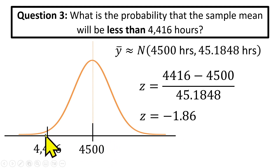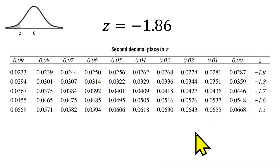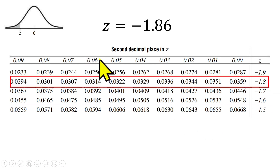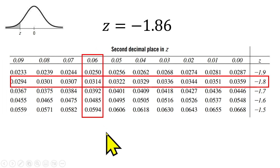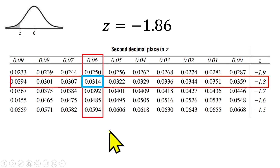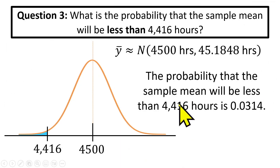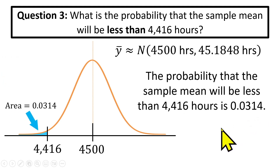To get the area in the tail, we look up this value on the z-table. Here's the z-table: minus 1.86. We start by looking at minus 1.8, then go to the top for the second decimal place at 0.06. Where those intersect, we get the area to the left of the z-value — the area in the lower tail. In this case that area is 0.0314, about 3%. So the probability that the sample mean will be less than 4,416 hours is 0.0314, about 3% — that's the area in the lower tail of the distribution.